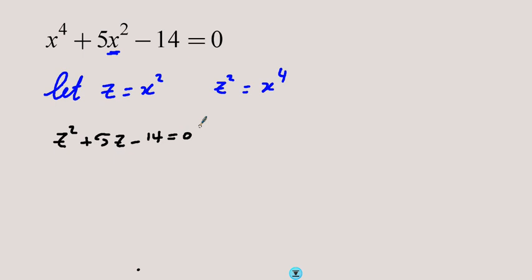Now this is a quadratic. What we have done is changed this equation that was not a quadratic into a quadratic in z. That is why we call this a quadratic in disguise — it is not a quadratic but it was reducible into one. We now proceed in the normal way and factorize, since it is easily factorisable.